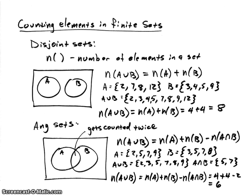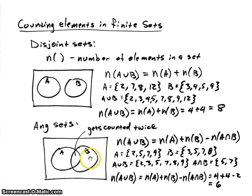Now if we have any type of sets and we don't know whether they're disjoint or not, we'll assume there might be some overlap. If we look at the number of elements in A union B, and we just take the number of elements in A plus the number of elements in B, we'll notice that the middle overlapping part would get counted twice. So in order to get an accurate count, we need to subtract off that middle part. This gives us the property: |A ∪ B| = |A| + |B| − |A ∩ B|.